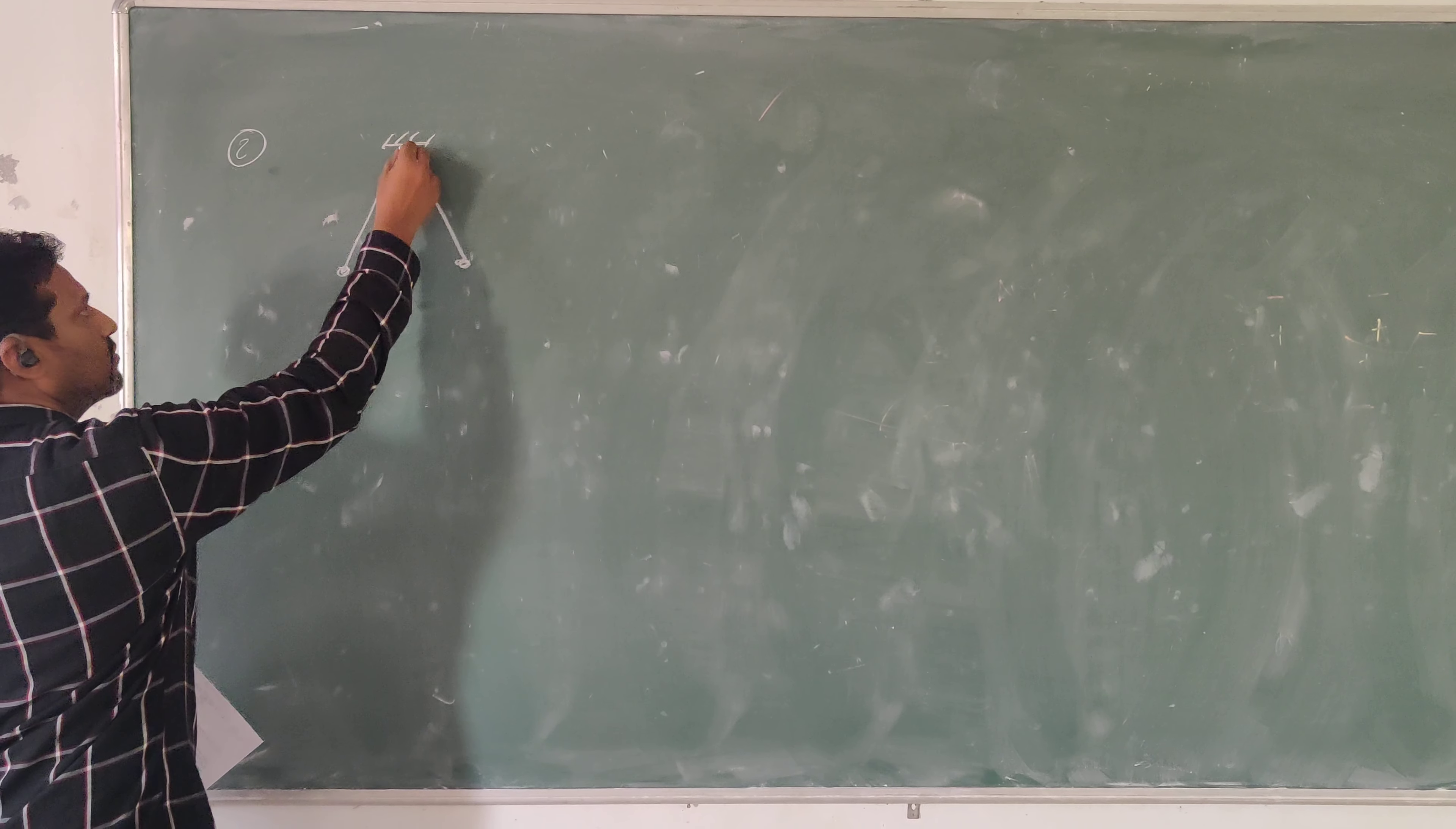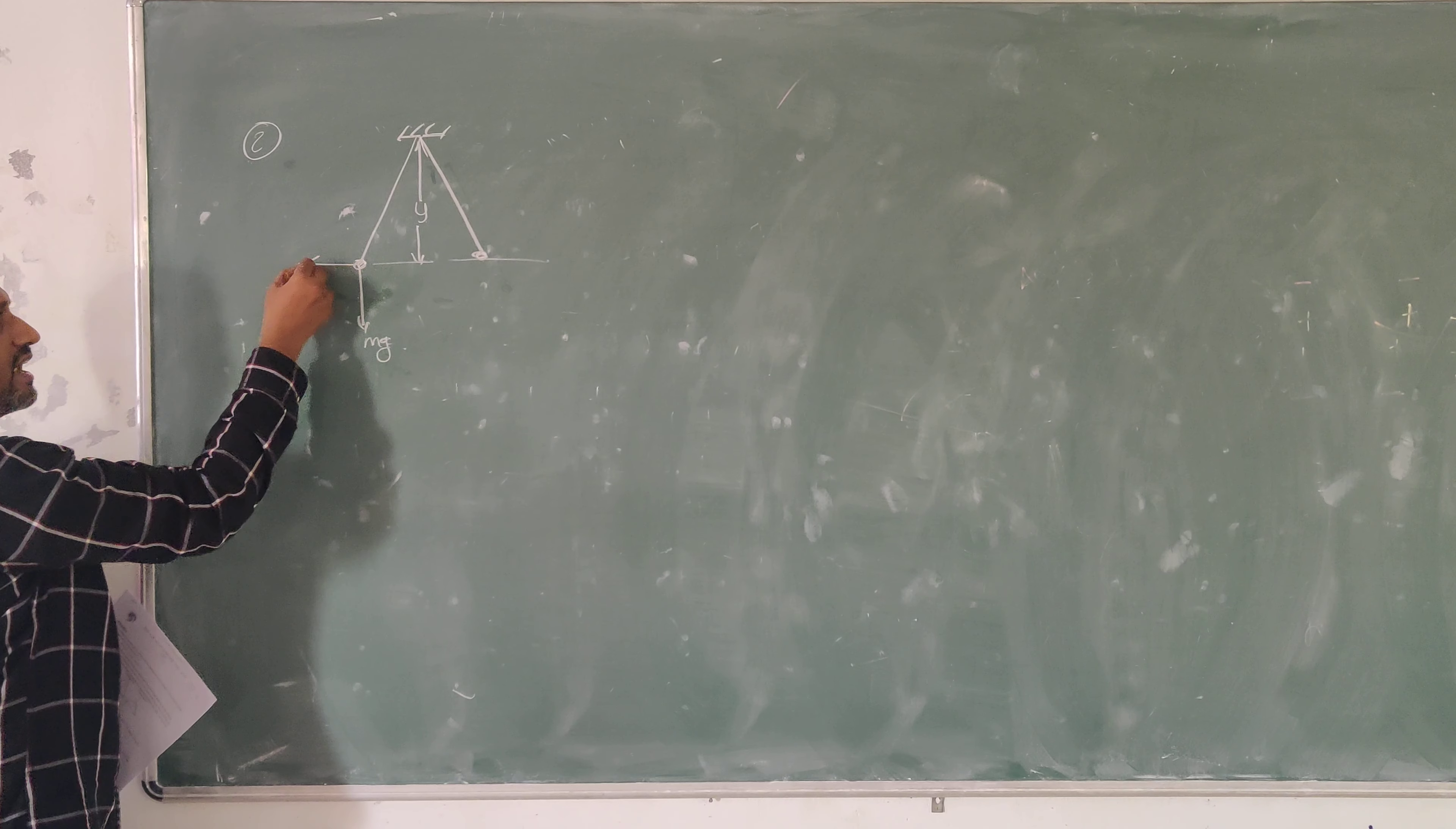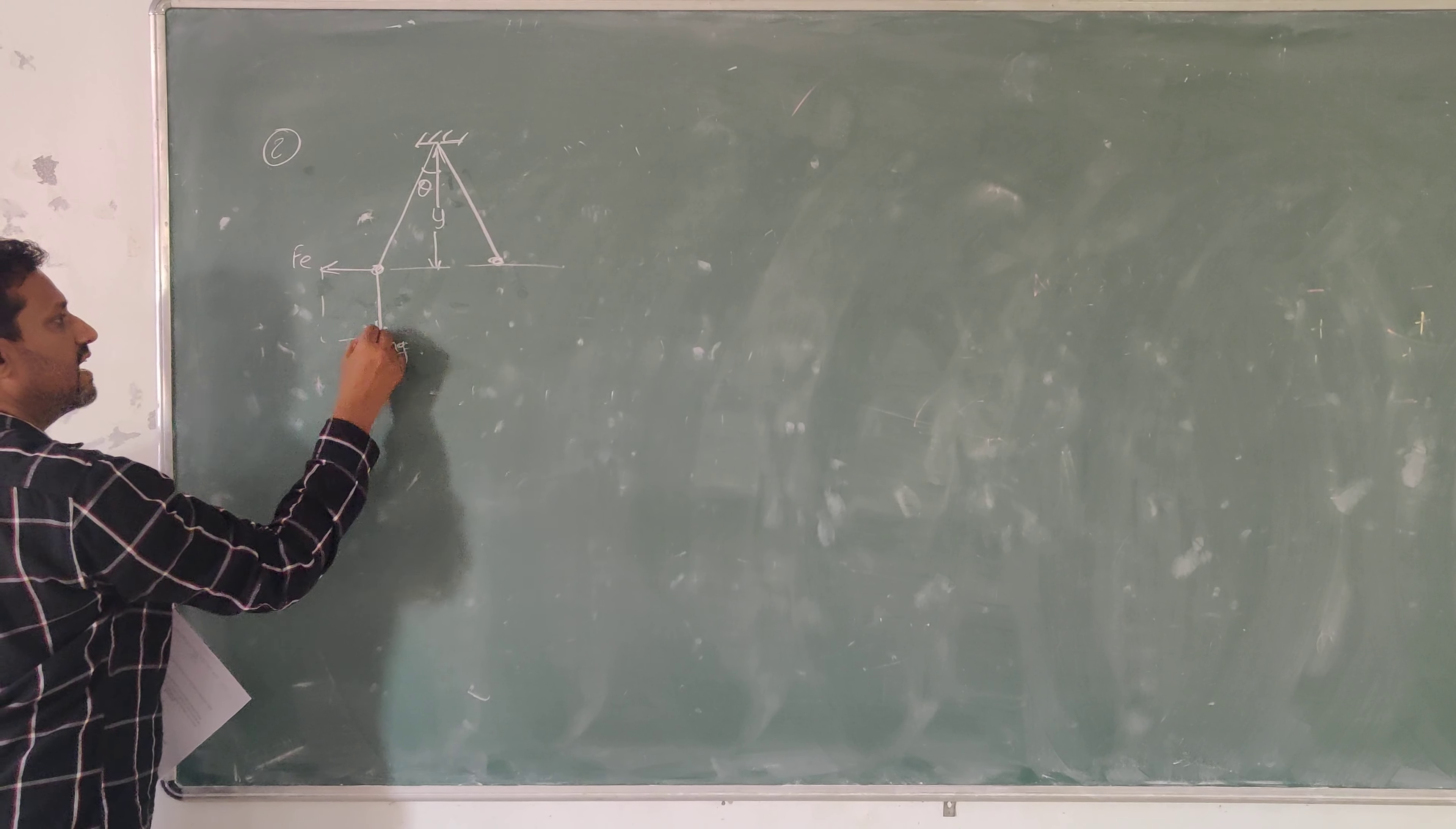Each ball has mass m, and thereby mg is the force acting downward, and this is the electrostatic force. If the angle of suspension is theta, then the same angle we can expect on the other side. Then from this we can write Fe equals mg tan theta.